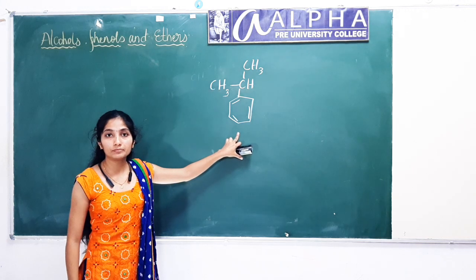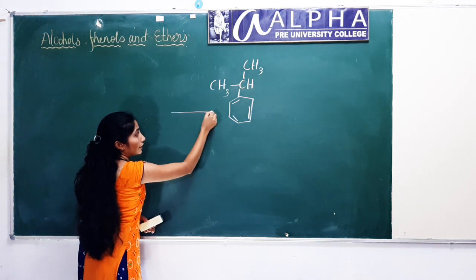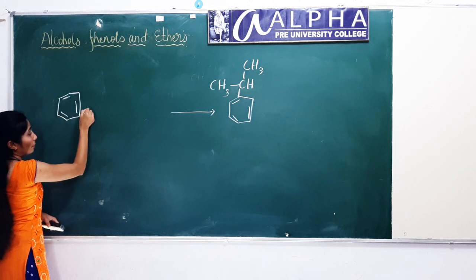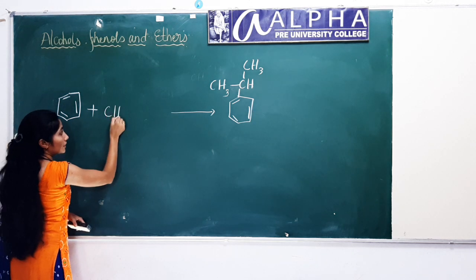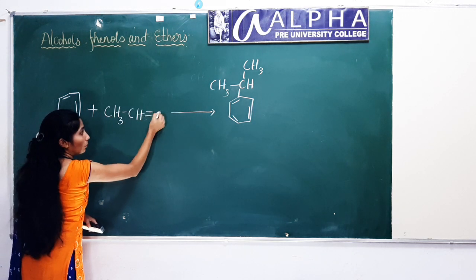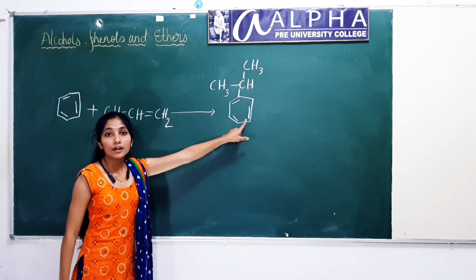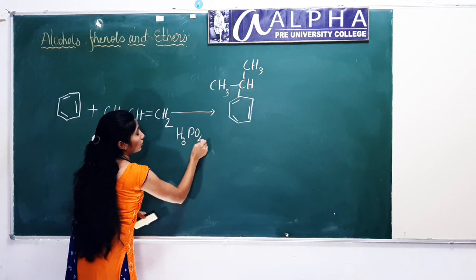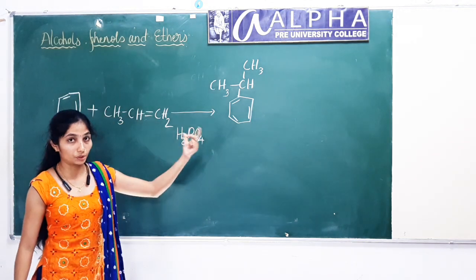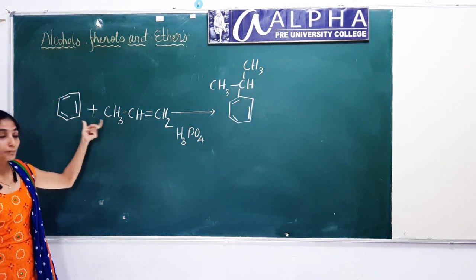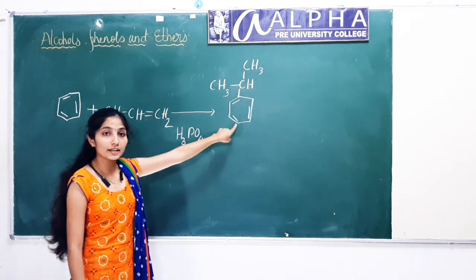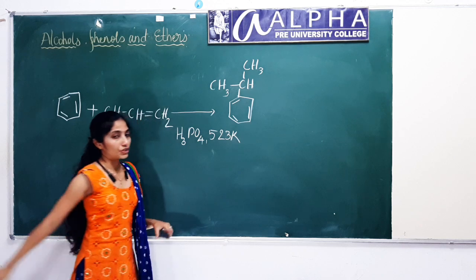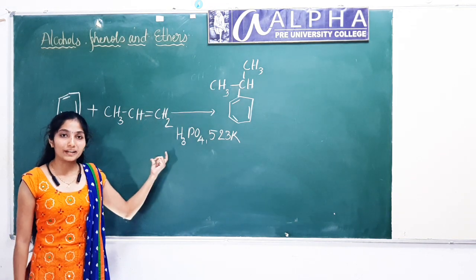How will you prepare cumene? Cumene is prepared by the reaction of benzene with propene (CH₃–CH=CH₂) to give cumene. In your CET and NEET examinations, they will give the reactants benzene plus propene and ask what the product is. The product is cumene, in the presence of phosphoric acid at 523 Kelvin temperature. This is the method for preparation of cumene.